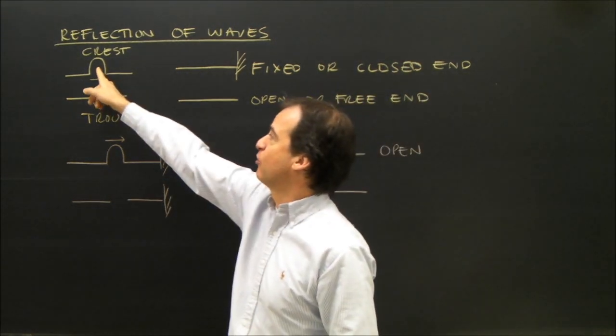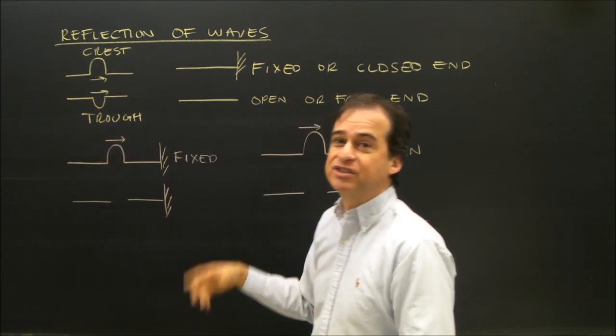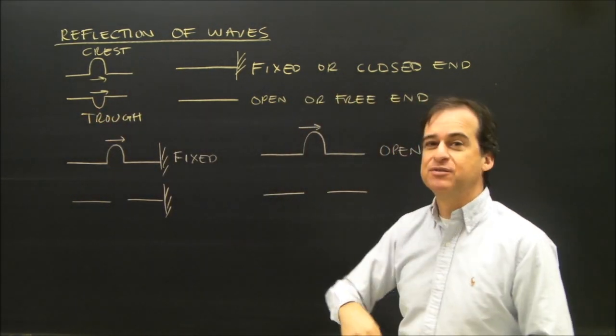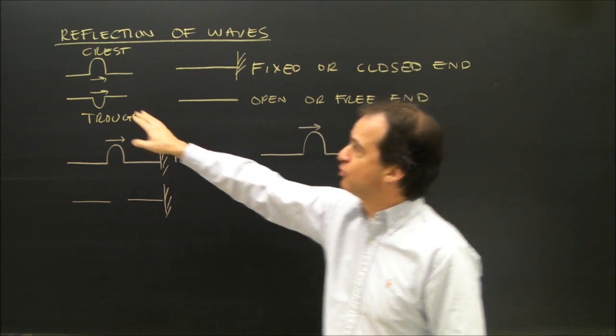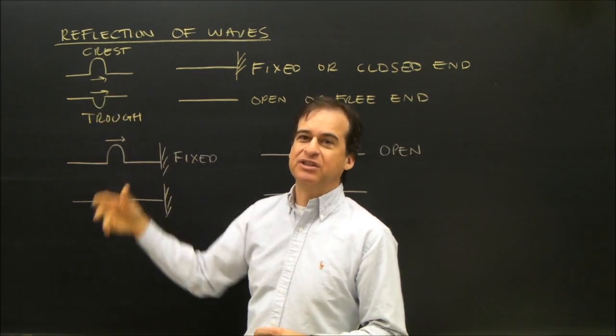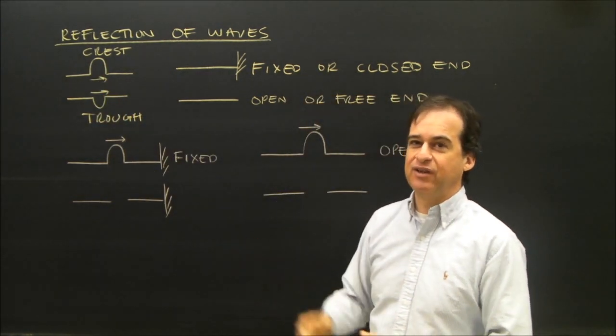We can look at waves. If I send a crest or a trough, I want to see what happens to that. A wave is made up of a crest and a trough, but I'm just going to look at one part of it so that we can see clearly what happens when the wave hits something.